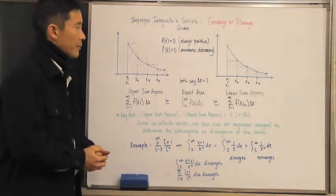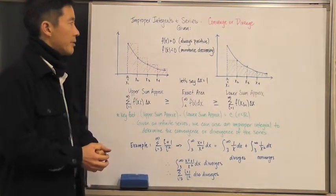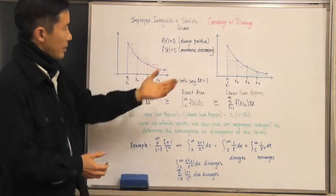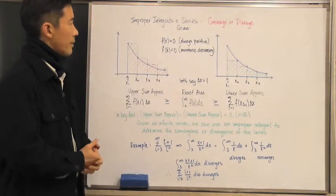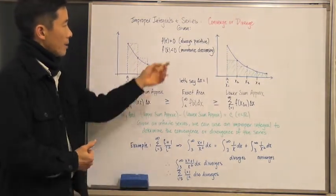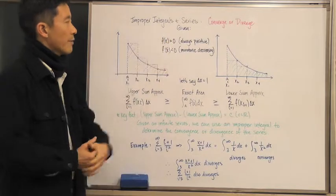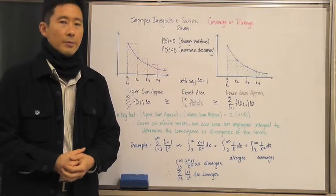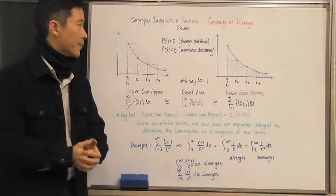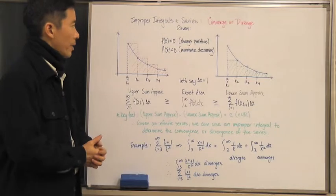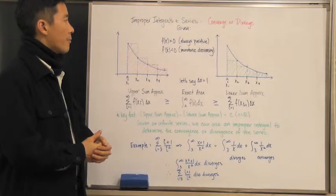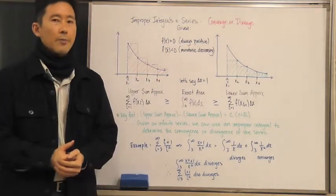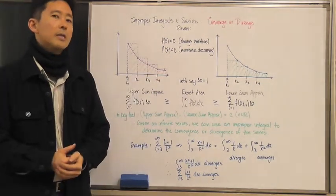Let's say that we have a certain given situation described here by the graphs. We're going to say that f of x is greater than zero, which means that it's always going to be positive. And we also know that f prime of x is always going to be less than zero, which means that it's monotonic decreasing.